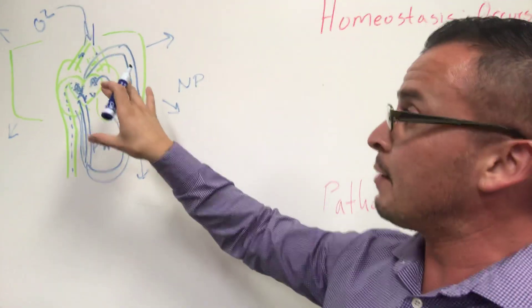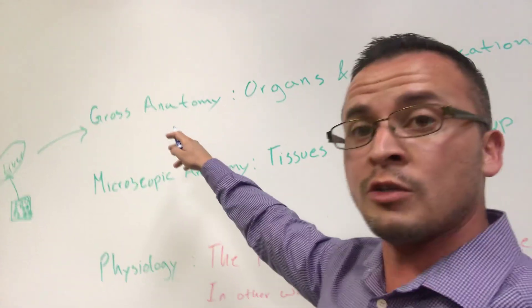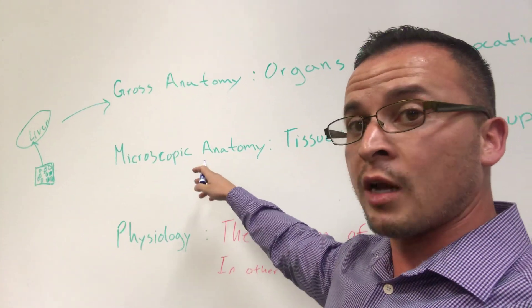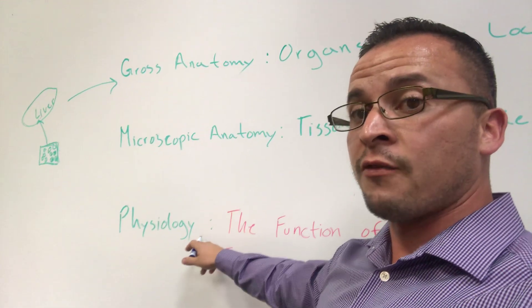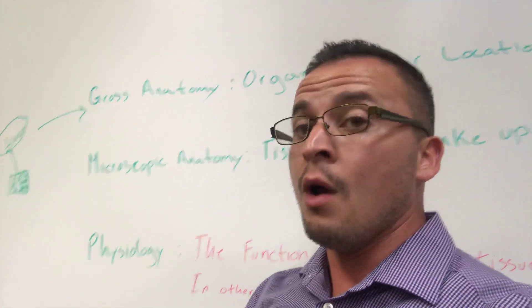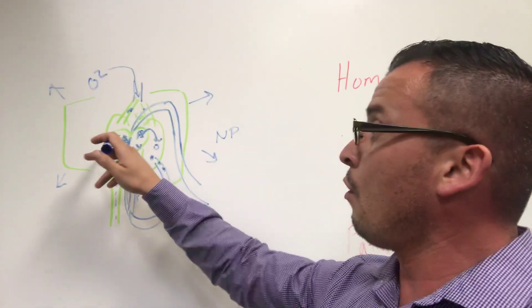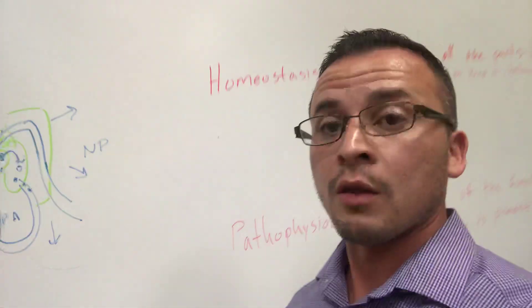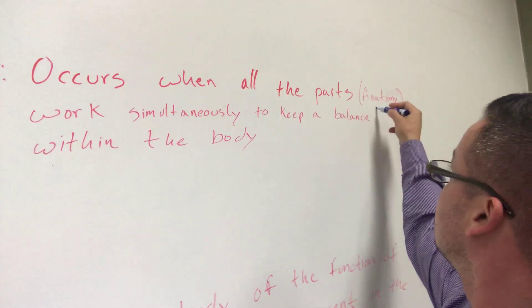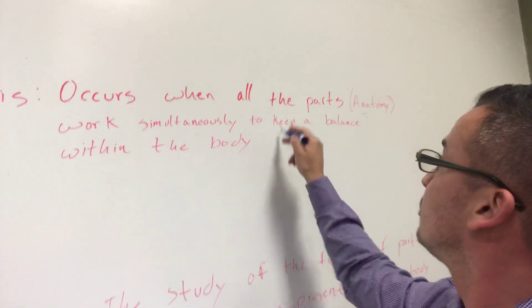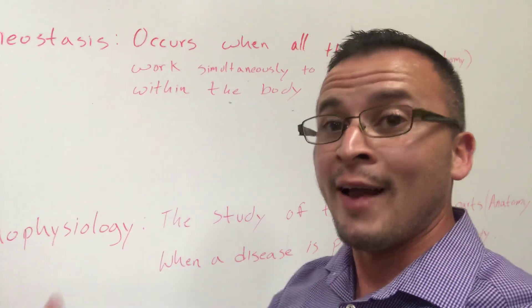Every single body part — the anatomy, meaning body parts — gross anatomy is big body parts, organs; microscopic anatomy is the cells that make the tissue and the tissue that makes the organs. Physiology is the function of how everything works together. And when all the body parts work together appropriately, you have what's called homeostasis, which occurs when all the parts — meaning anatomy — work simultaneously to keep a balance within the body. That means everything is working the way it's supposed to and getting to where it needs to go in a timely fashion.